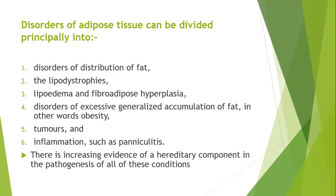The disorders of adipose tissues can be divided principally into the disorders of distribution of fat — the lipodystrophies, lipoedema and fibroadipose hyperplasia — and disorders of excessive generalized accumulation of fat, in other words obesity, tumors, and inflammation such as panniculitis. There is increased evidence of the hereditary component in the pathogenesis of all these conditions. So this lecture is mainly concerned with the genetic and familial conditions that result in disorders of adipose tissue.